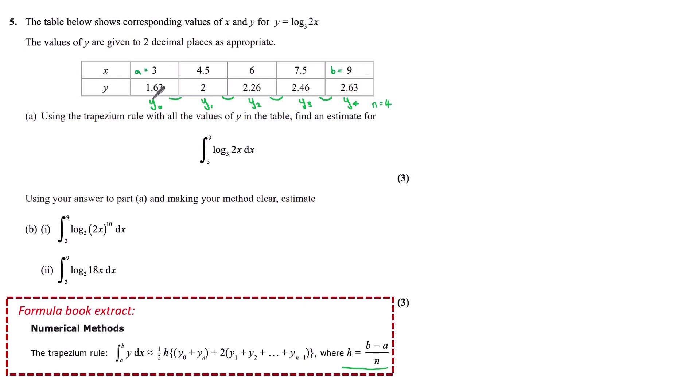So, labelling up, we've got our y0 value, y1, y2, y3, y4. This gives us an n value of 4. a and b are the limits of our integration. We can also see these are the extreme values of x in our table.